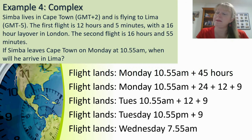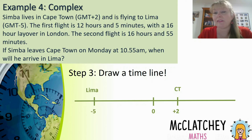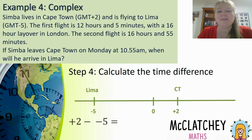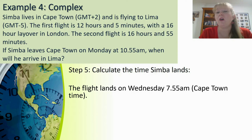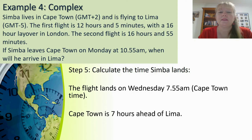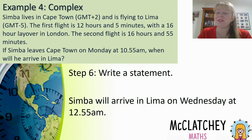Now we need to find the local time in Lima. Drawing the timeline: Lima is at negative 5 and Cape Town is at positive 2, giving a seven-hour time difference. Mathematically: plus 2 take away negative 5 equals plus 2 plus 5, which is 7 hours. Lima is 7 hours behind Cape Town, so we subtract 7 hours from Wednesday 7:55am — giving 12:55am on Wednesday. That's just after midnight in Lima. Statement: Simba will arrive in Lima on Wednesday at 12:55am.